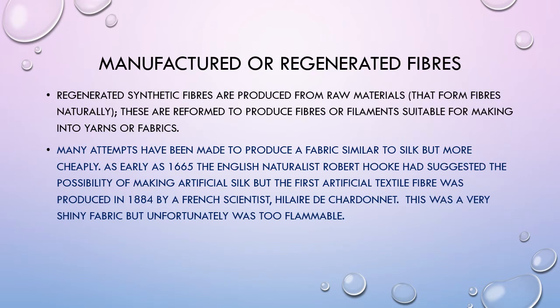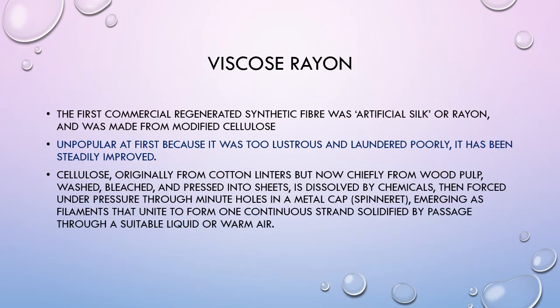Manufactured or regenerated fibres are produced from raw materials that form fibres naturally, and these are reformed to produce fibres or filaments suitable for making into yarns or fabrics. Many attempts have been made to produce a fabric similar to silk but more cheaply. As early as 1665, the English naturalist Robert Hooke had suggested the possibility of making artificial silk. The first artificial textile fibre was produced in 1884 by French scientist Hilaire de Chardonnet. This was a very shiny fabric but unfortunately it was far too flammable. The first commercial regenerated synthetic fibre was artificial silk or rayon, made from modified cellulose, and it was unpopular at first because it was too lustrous — that's too shiny.